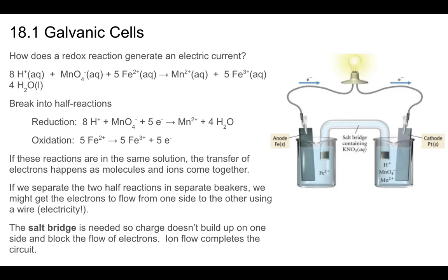The reduction half-reaction involves gaining five electrons: 8H⁺ + MnO₄⁻ + 5e⁻ → Mn²⁺ + 4H₂O. This is balanced by both atoms and charge. The oxidation reaction has Fe²⁺ turning into Fe³⁺, and it must be multiplied by 5 to produce five electrons for every five electrons consumed. These are the two half-reactions that add up to the overall reaction.